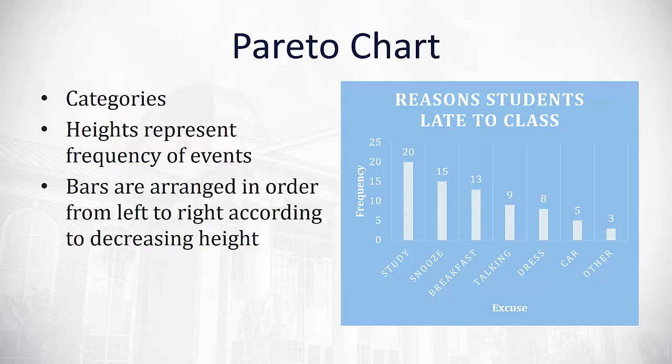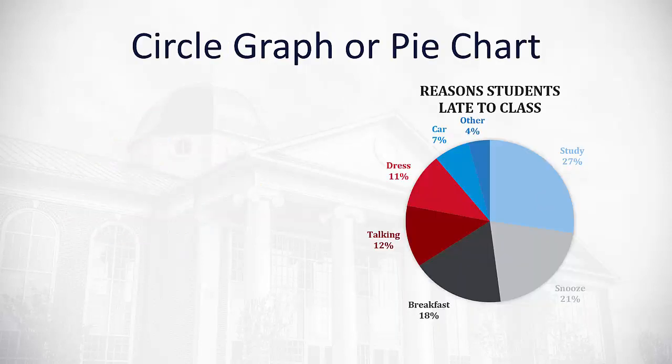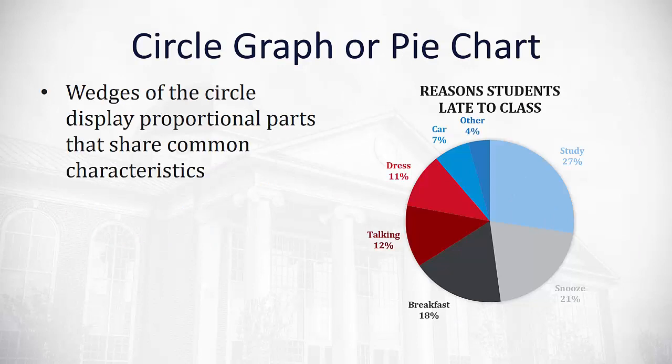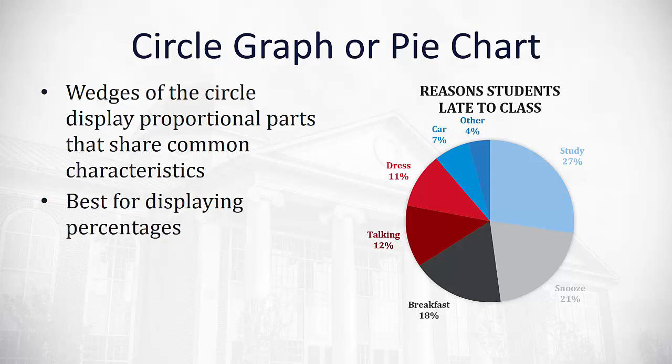Another way I could display this same information is with a circle graph or a pie chart, which uses wedges of the circle to display proportional parts that share a common characteristic. Here I can see the percentage of my students whose excuse was studying compared to snoozing on the alarm. Pie graphs or circle graphs are usually best for displaying a percentage rather than the actual number in each category.